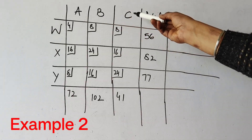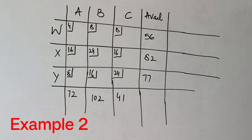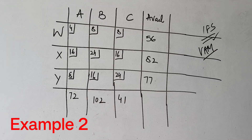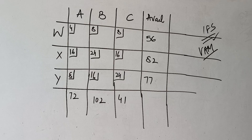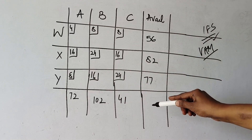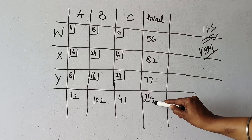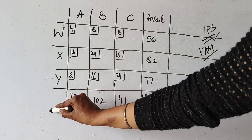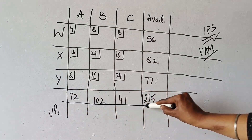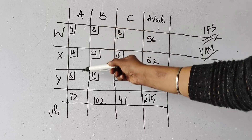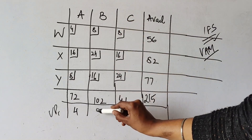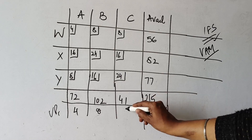Now we see a second question with three sources W, X, Y and destinations A, B, C. We find the optimal transportation cost using VAM. First, we check if it's a balanced problem: availability totals 215 and requirement totals 215 — balanced, no dummy row or column needed. To calculate VAM, we find unit penalties. For UP1: column 1 has minimum 4 and next minimum 8, difference is 4. Column 2 has 8 and 16, difference is 8. Column 3 has 8 and 16, difference is 8.